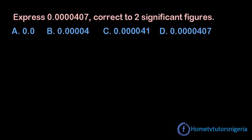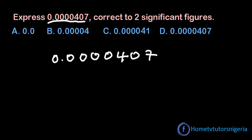There are three rules on determining how many significant figures are in a number, but we are just going to look at two rules that concern this question. So let us quickly write out the decimal number so that we can analyse it. The first rule says that non-zero digits are always significant. So we are talking of 4 and 7 in this case — they are significant figures.